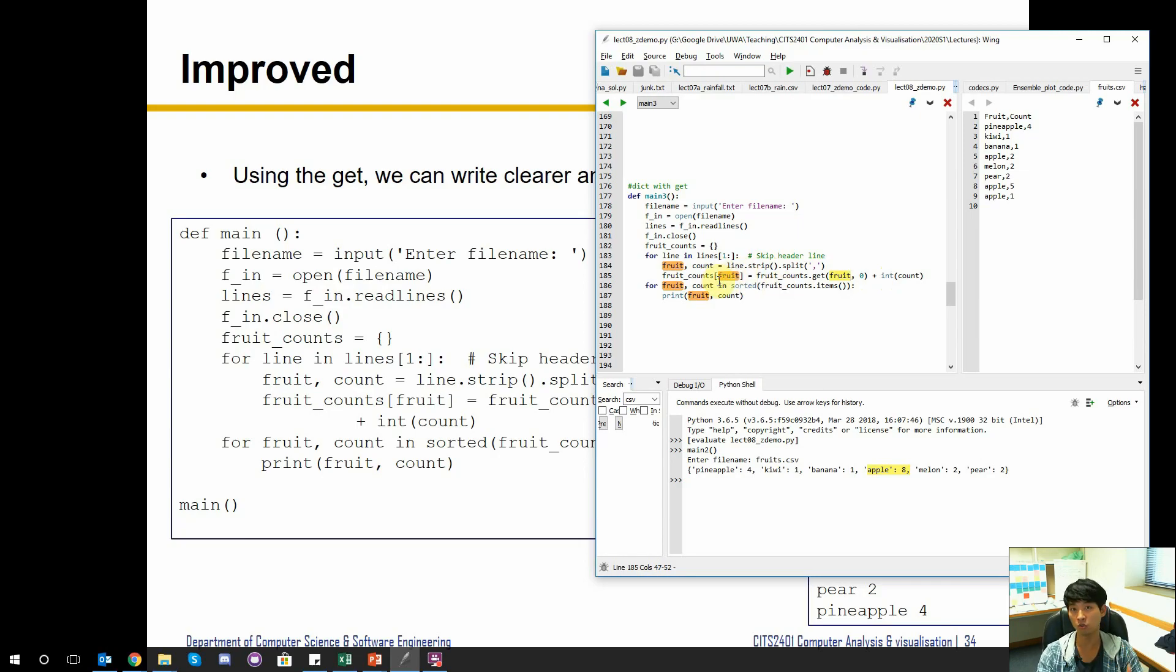If we didn't have the fruit before, what we do is this side of the equation is going to be zero plus an integer. And remember how we create a new dictionary: you just have to provide the key value that you want to create. So this way either it's going to create a new one with zero plus the new count, or it's going to get the new value and add it on to the one that we are reading now and update the existing dictionary value here.